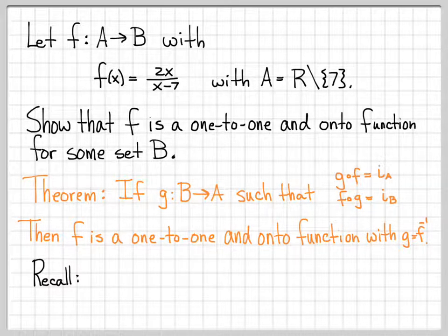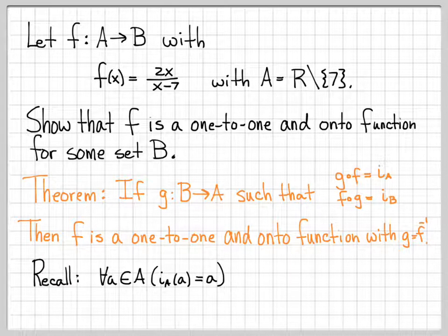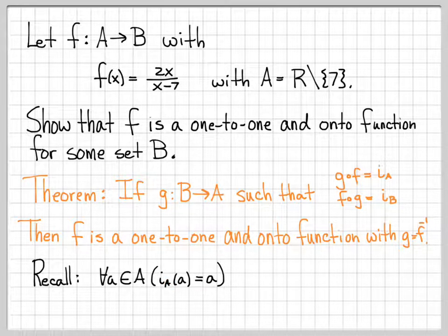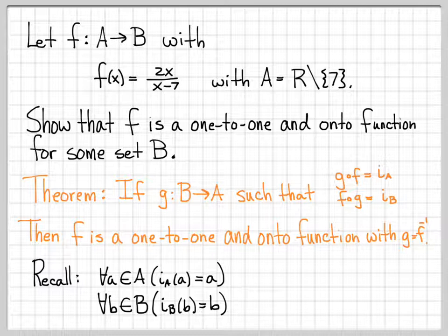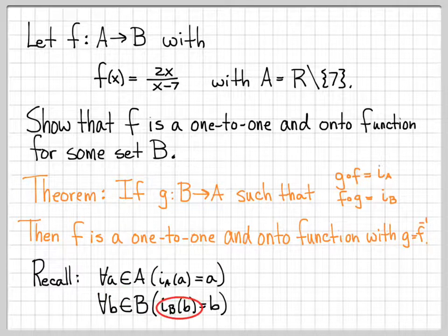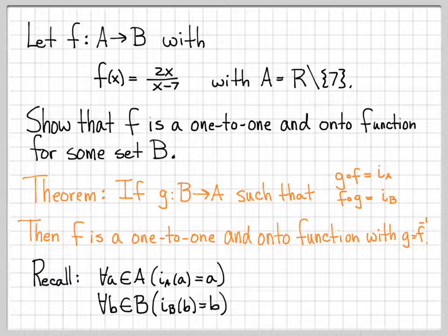Just to recall what these identity functions are: iA and iB are called identity functions because whenever you evaluate them, you get exactly what you put in. The identity function i sub A takes elements in A, and for all elements a of A, it just returns a. Similarly, the identity function on B is defined on B, and wherever we evaluate it, b is exactly what comes out.